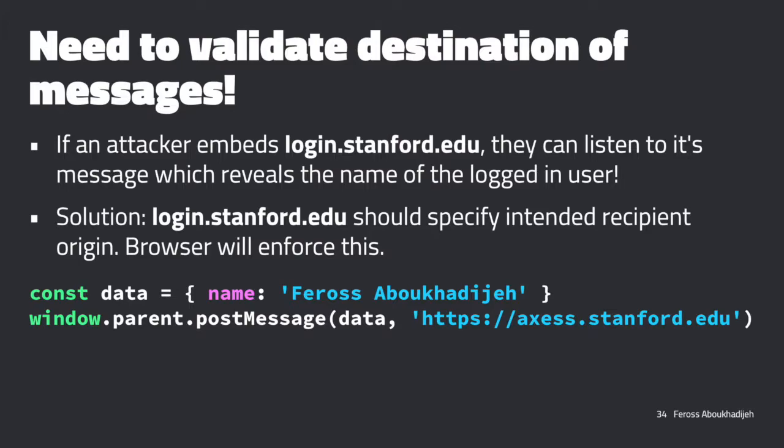The way we solve this is we need to validate the destination of where we're sending our messages. If we don't do that, any attacker can embed this page and find out who's logged in. The way to do this is to let the browser do it for you. The API supports an additional parameter where you specify the origin you're trying to talk to, and the browser will not let the message go through if the parent doesn't match that origin.